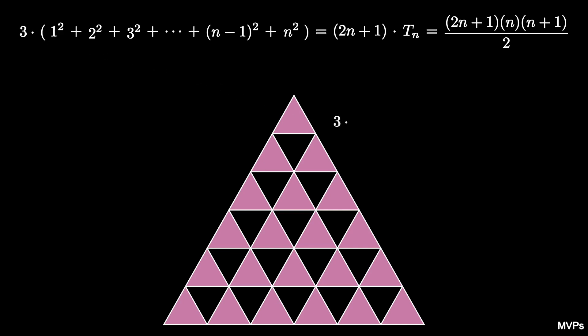Consequently, 3 multiplied by the sum of the first n-squares is equal to 2n plus 1 times n times n plus 1 over 2.